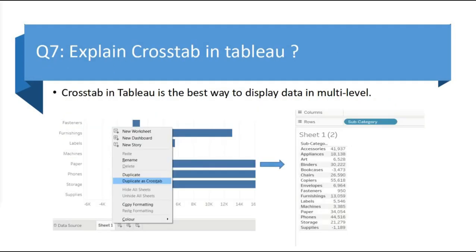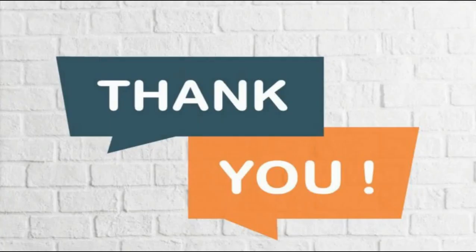The next question is: explain crosstab in Tableau. Crosstab in Tableau is the best way to display data in a multi-level format. For example, if we have created a bar chart of some category with profit and we want to see the data in tabular form, we can duplicate it as a crosstab — as you can see in the screenshot as well.